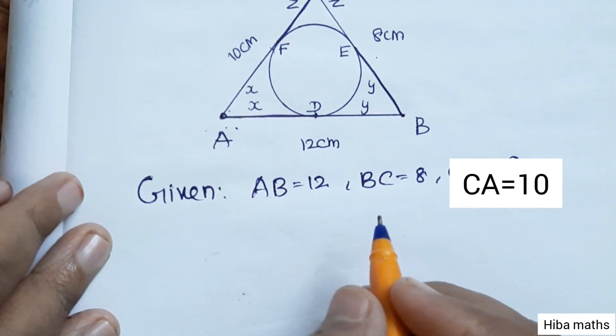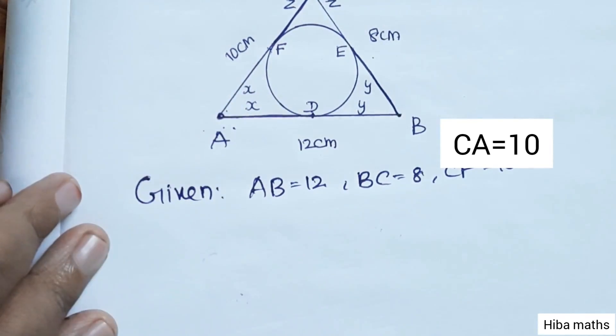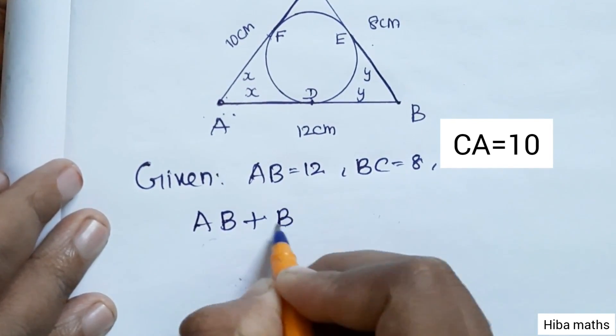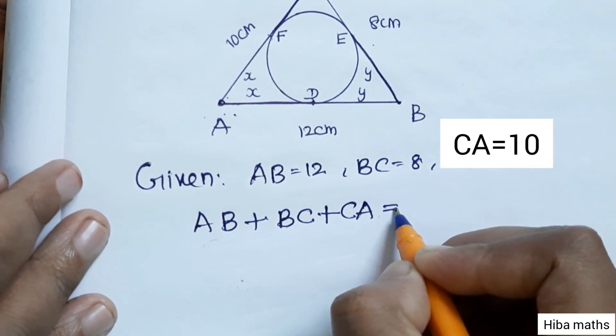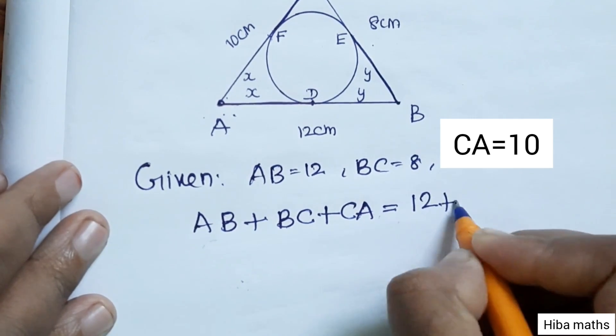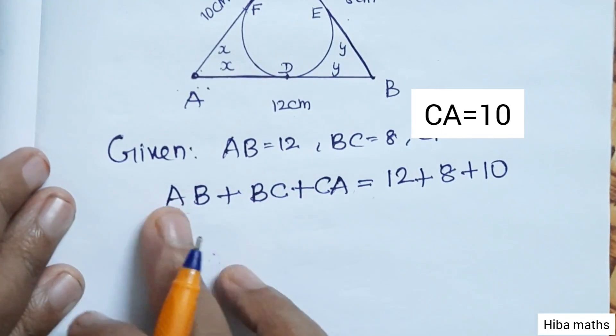How do we do this? We add the three sides. AB plus BC plus CA. If we add three sides, AB is 12, BC is 8, CA is 10.